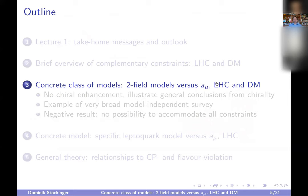Now let's go to our first example — the no-name two-field model — which we'll discuss from the point of view of g-2, LHC, and dark matter. The model can in principle explain both g-2 and the dark matter relic density, and we need to compare its predictions to LHC constraints. Importantly, this model has no chiral enhancement, and we will use it as an example of what happens in that case, then generalize.